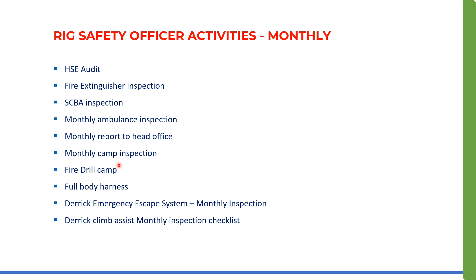Next is monthly camp inspection, performed by the rig safety officer. Then the fire drill at the main camp — note that the fire drill is conducted weekly at the rig site, but at the main camp it is conducted once a month. Finally, full body harness monthly inspection, the derrick emergency escape system monthly inspection, and the derrick climb assist monthly inspection checklist — these are important monthly activities that must be performed by the rig safety officer.